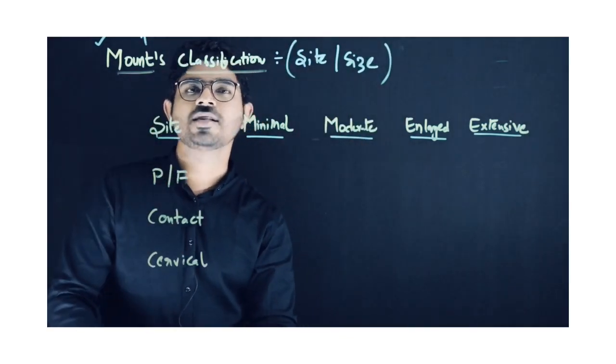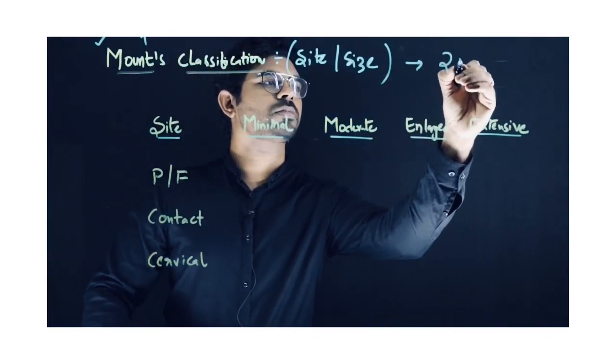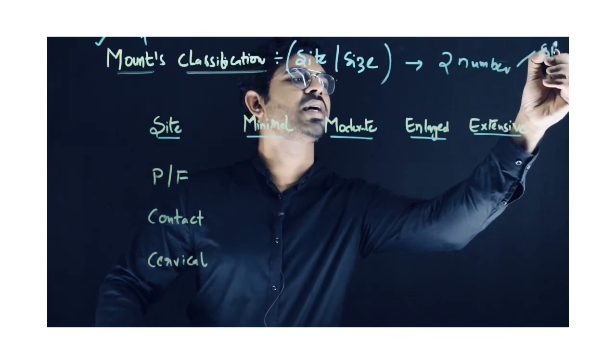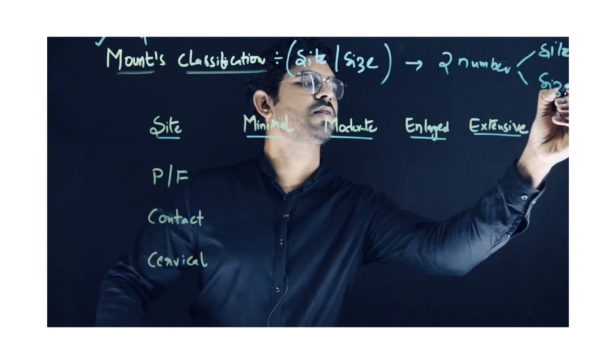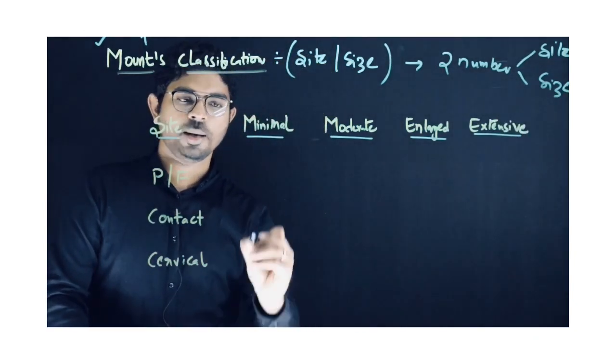the site and size classification, which is denoted by two numbers. Number one is about site and number two represents the size. We will learn what these numbers are. Number one: